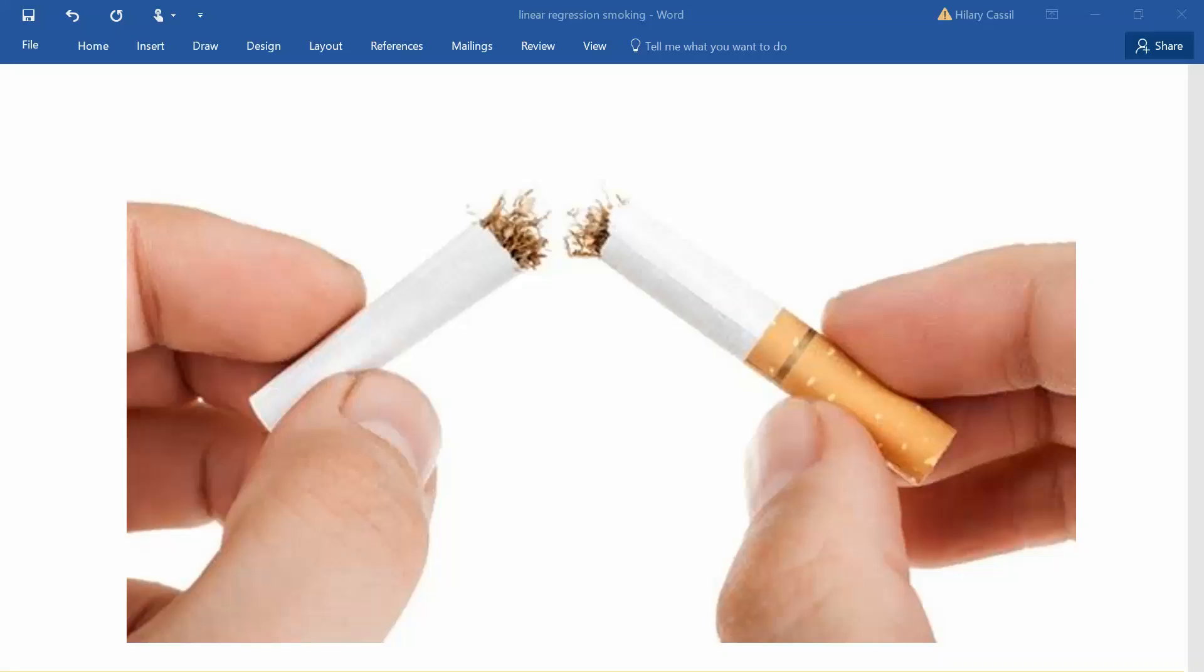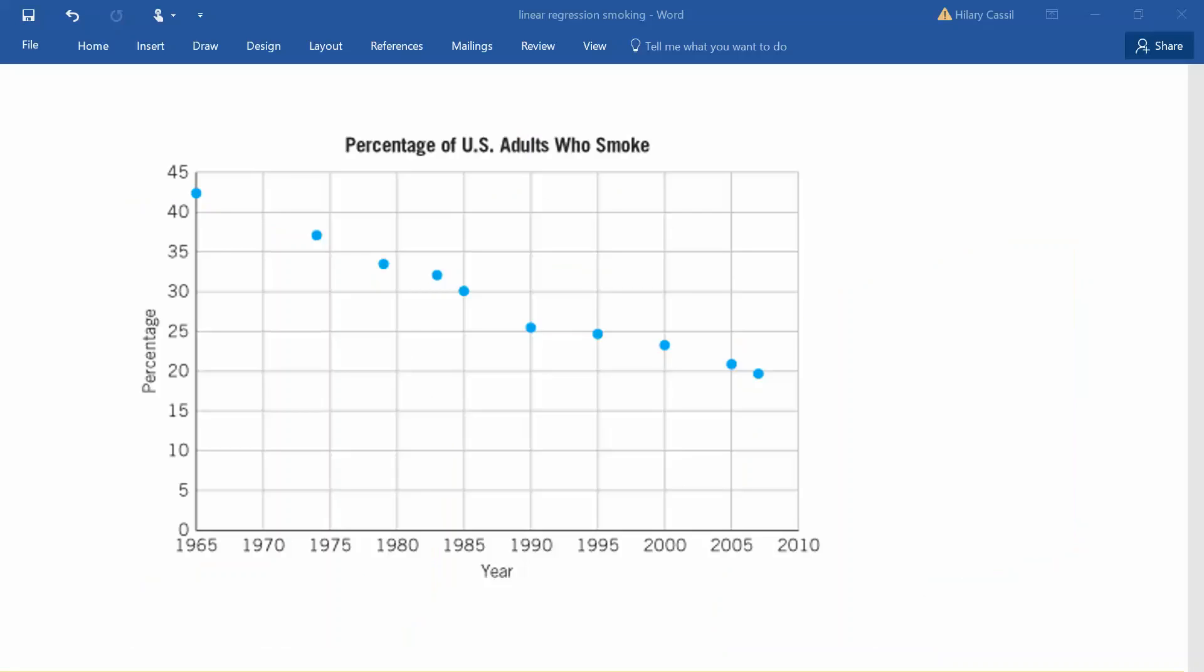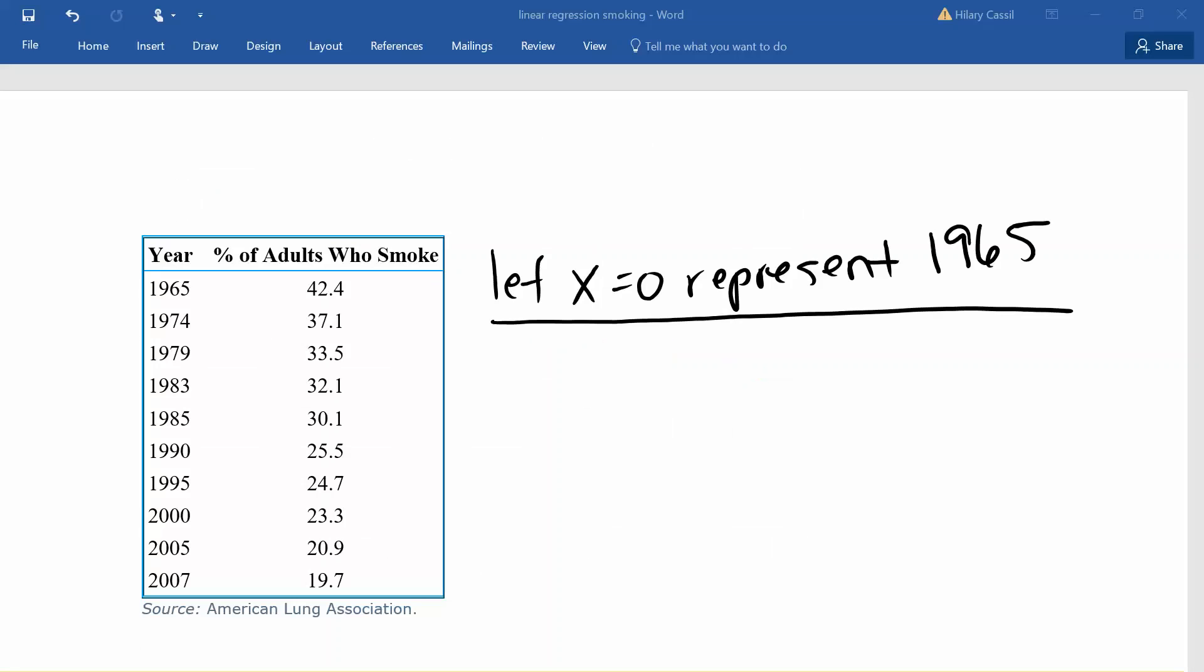What we can see from this graph is that the data for certain years and the percentage of US adults that smoke is approximately linear and it is decreasing. So that we can work with smaller values, we're going to let x equals zero represent the year 1965. Based on that, what we can see is that 1974 would represent an x value of nine since it's nine years after 1965.